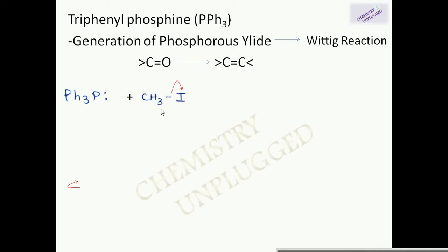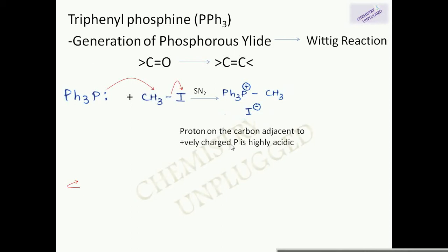For this reaction we need triphenylphosphine and a nucleophile-containing molecule — for example, methyl iodide. In the first step, the lone pair of electrons present on phosphorus will attack on CH3, and iodide, being a good leaving group, will be removed. This is an SN2 reaction.